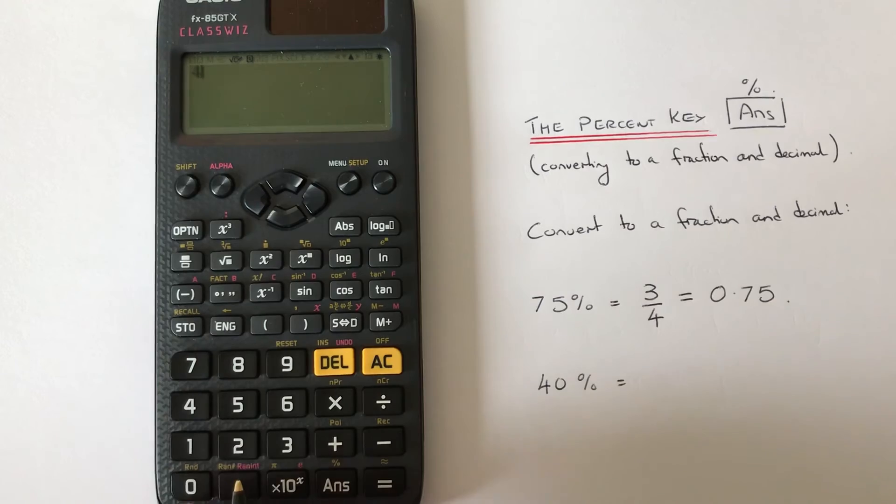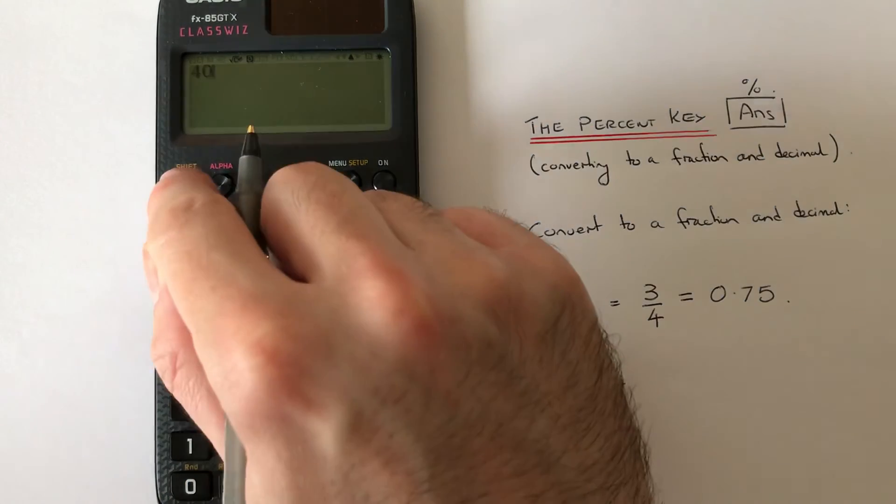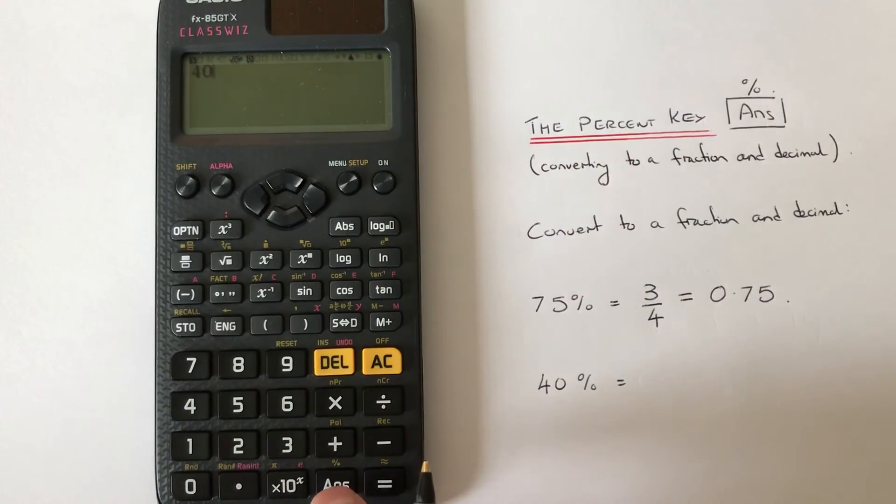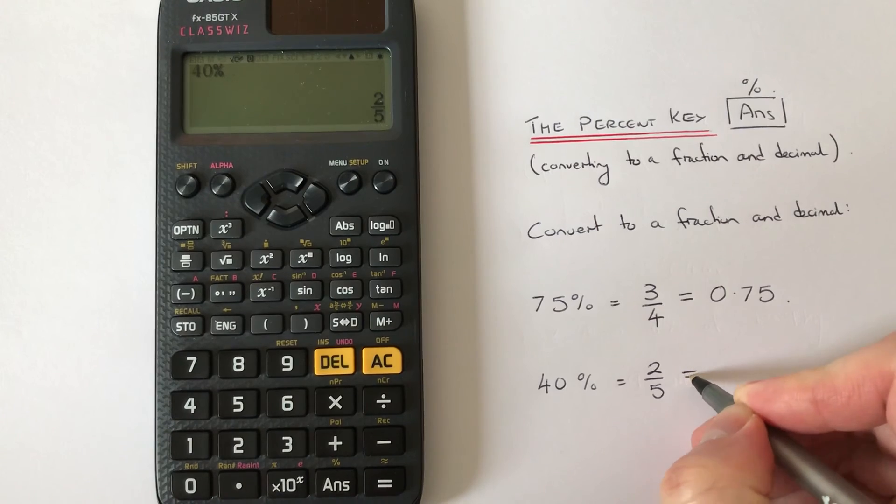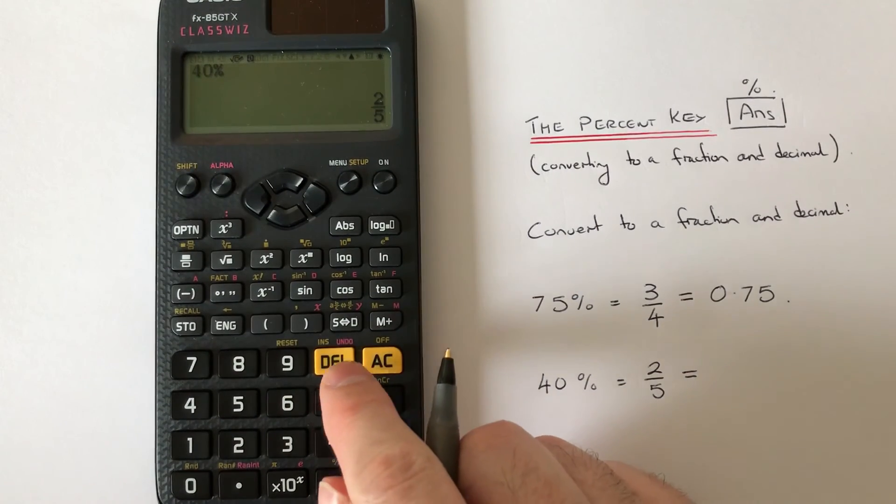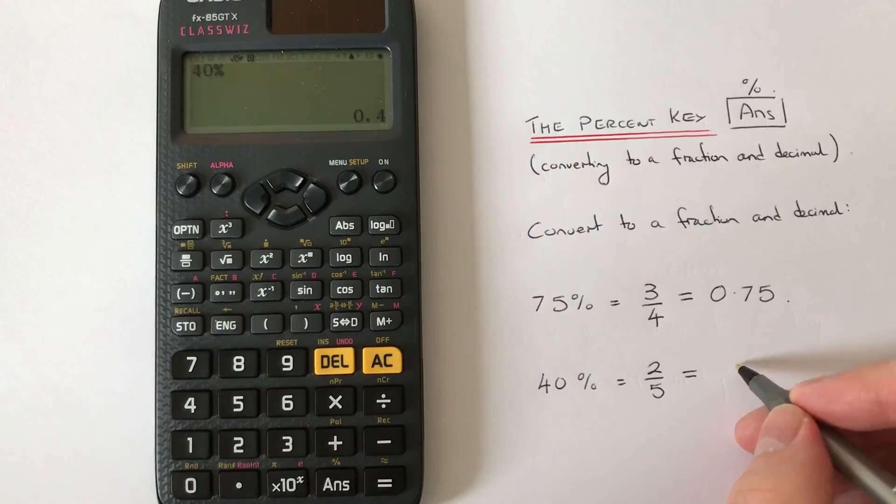So we type in our number 40, then Shift ANS, press equals. We get a fraction of two-fifths and our decimal would be 0.4.